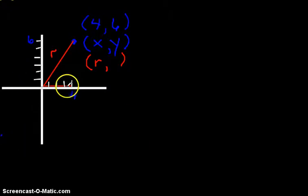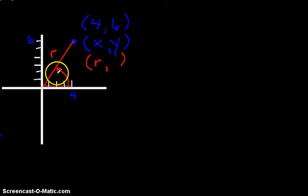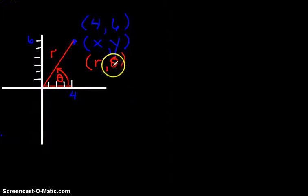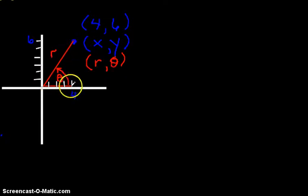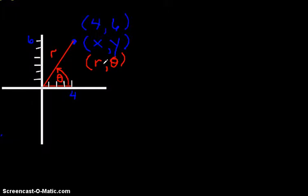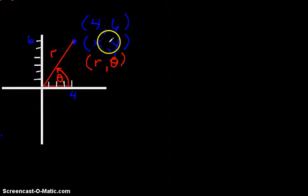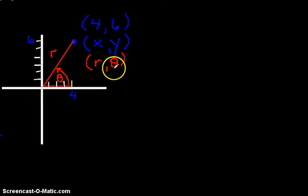We then ask: what angle does line R make with the x-axis? We're going to call that angle theta, so theta is our second element. This system — using the line and the angle — is called the polar coordinate system. Today we'll find a way to flip-flop between the two systems: given XY, convert to r and theta, and given r and theta, convert to x and y.